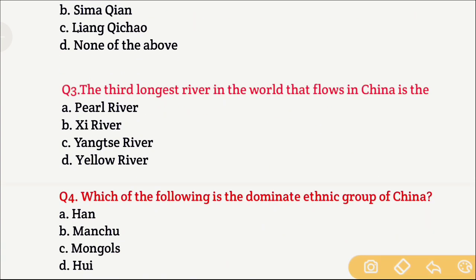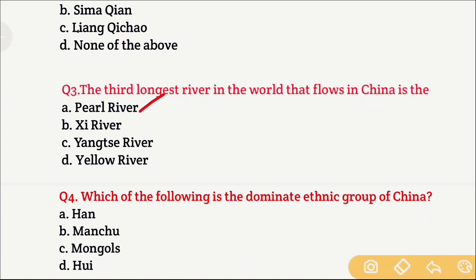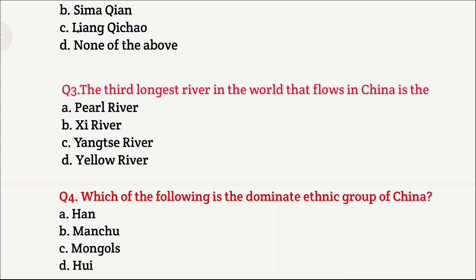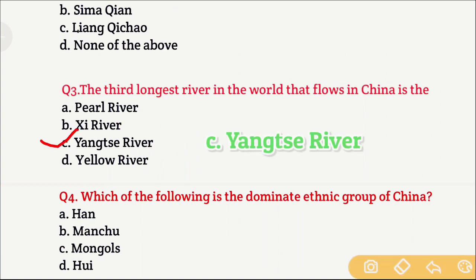Question 3: The third longest river in the world that flows in China is — Option A is Pearl River, Option B is Sea River, Option C is Yangtze River, and Option D is Yellow River. The right answer is Option C, which is the Yangtze River — the third longest river in the world.